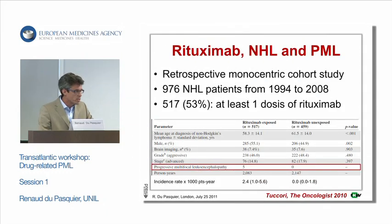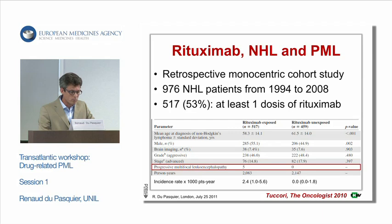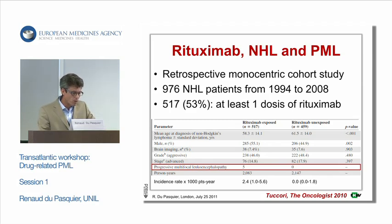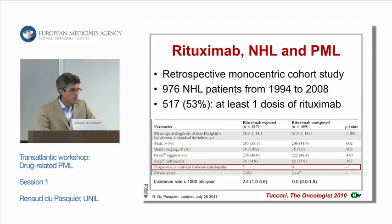In this other retrospective monocentric cohort study, almost 1,000 non-Hodgkin lymphoma patients were studied from 1994 to 2008. Half had been exposed to at least one dose of rituximab. There were not really differences between exposed and non-exposed groups, except for age — older in non-exposed — and more males among exposed. But there were five PML cases in those who received rituximab and none in the non-exposed. The authors estimated an incidence rate of PML of 2.4 per 1,000 patients exposed to rituximab.